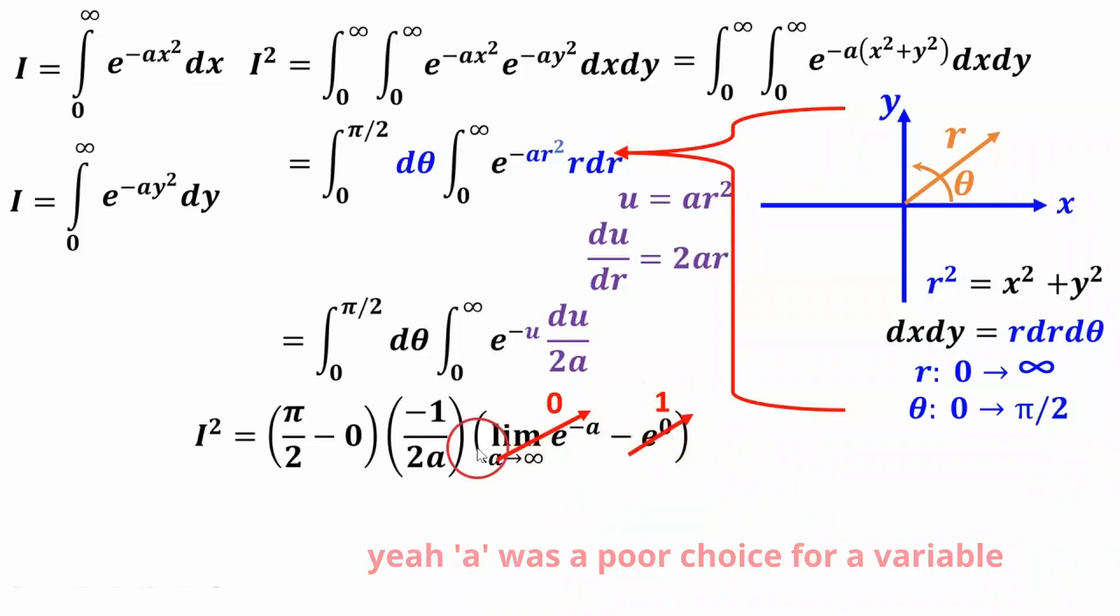The right term becomes one. And if we simplify this whole thing, we get this negative cancels out with this negative. 2 times 2 is 4. And then the a is here. So to solve for I, we take the square root and we get plus or minus. Unfortunately, there's plus or minus one-half root pi over a.